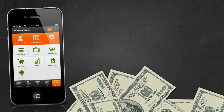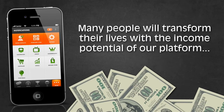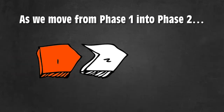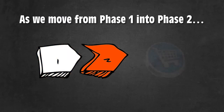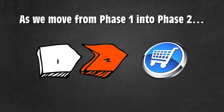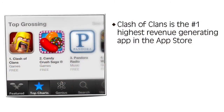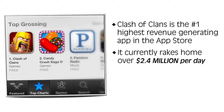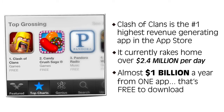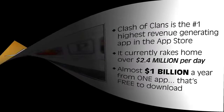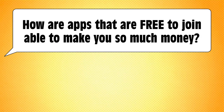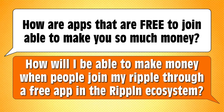The income potential with Ripplin is no small matter, as we believe many people will transform their lives with the income potential of our platform. As we move from phase one into phase two, that's when the commerce will start to flow through the Ripplin ecosystem. Let me share a quick story about an app called Clash of the Clans. Right now, Clash of the Clans is the number one highest revenue generating app in the App Store — it currently rakes in over $2.4 million per day. Almost a billion dollars a year from one app that's free to download. So how are free apps able to make so much money?